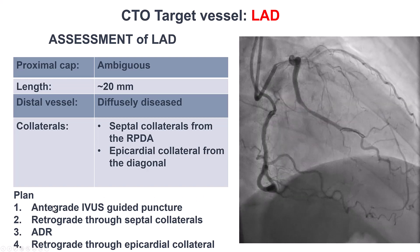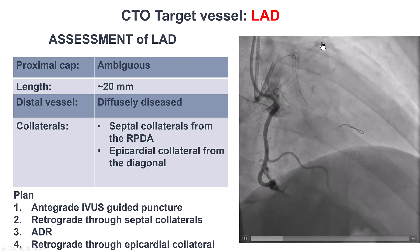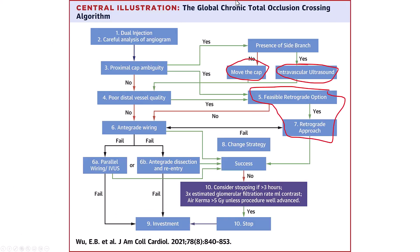Based on this, our plan was: first, antegrade wiring using IVUS guidance; second, retrograde through septals; third, ADR; and then an attempt for retrograde through epicardial collaterals. This follows the CTO global algorithm and specifically the algorithm for proximal cap ambiguity, which has three techniques: the move-the-cap technique involving dissection proximal to the area of ambiguity following the course of the vessel; IVUS guidance if there is a side branch next to the proximal cap; and the retrograde approach if a collateral or bypass graft is available.